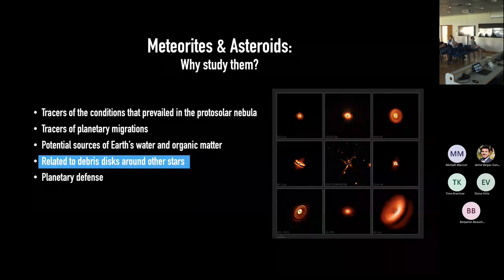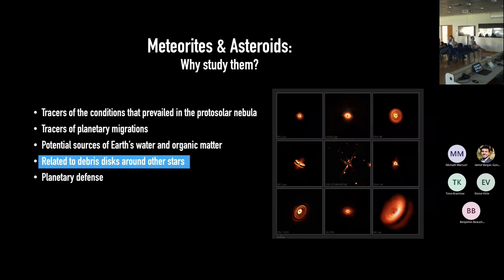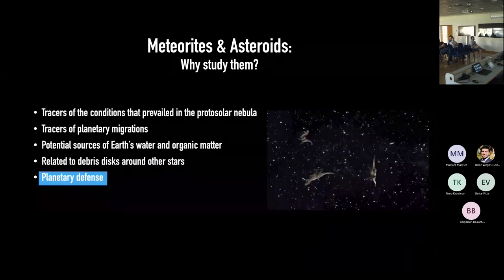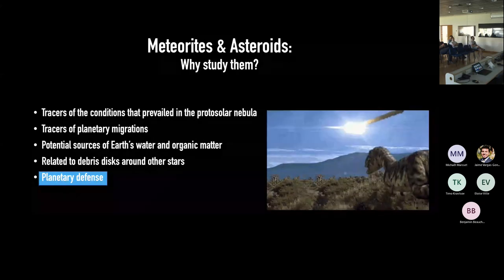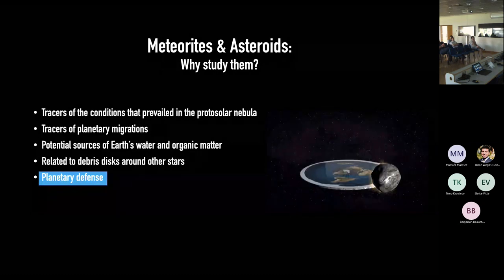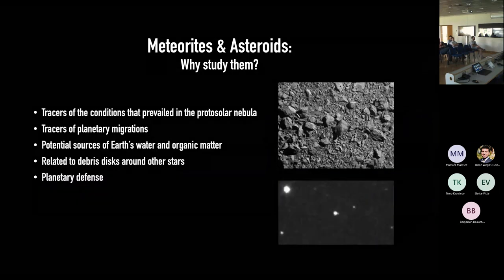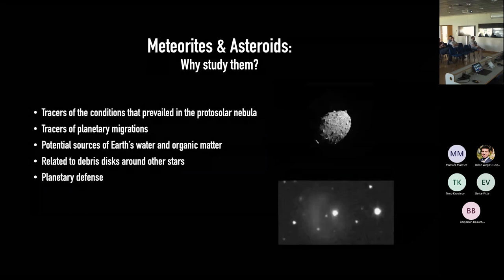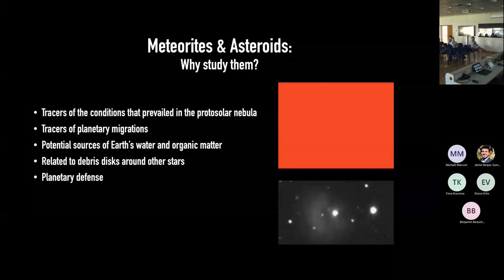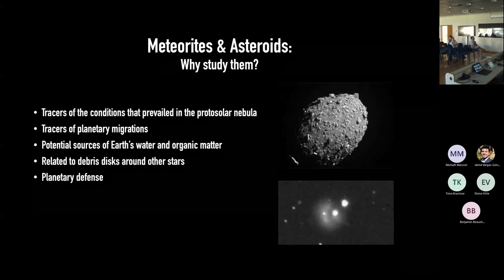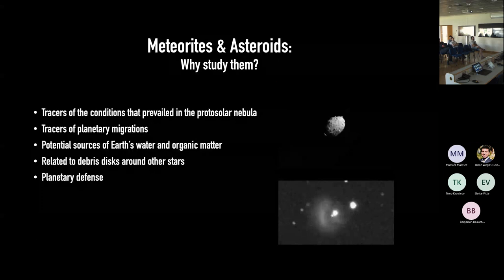Studying our solar system is closely related to the study of debris disks and protoplanetary disks around other stars — from astronomical observations of those disks, we get population-scale information, while our solar system can be studied down to the micrometer scale inside meteorites. And we all know what happened to the dinosaurs — they didn't have a space program. The DART mission last year tested a kinetic impactor on a small asteroid to see if we could change its orbit, so we'll be prepared if one is ever heading toward Earth.